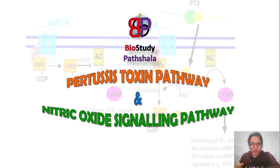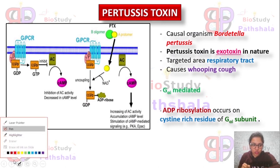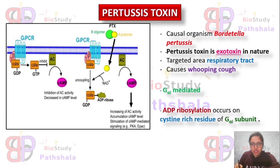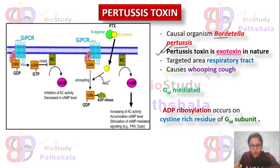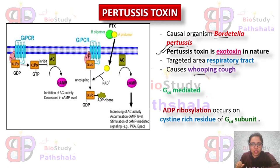So, what is Pertussis toxin? Pertussis toxin is an exotoxin — toxins secreted by an organism. The causal organism is Bordetella pertussis, and this toxin shows its effect on the respiratory tract, causing whooping cough in the human body.